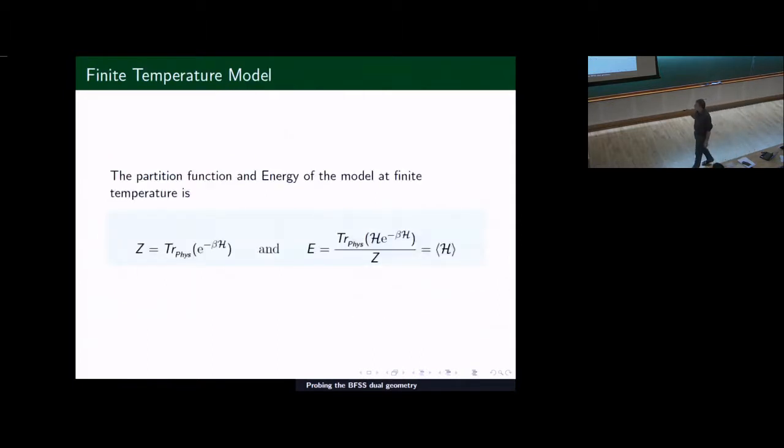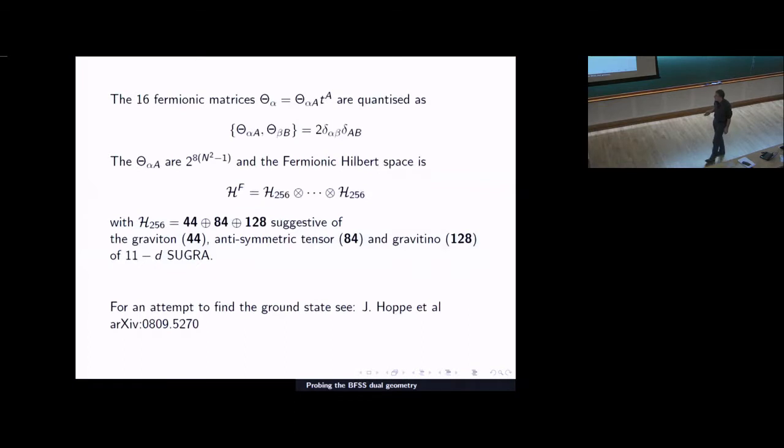The partition function, now once we have a Hamiltonian for the system, we can discuss the partition function. We're interested in the trace of e to the minus beta H. There is a Gauss law constraint. There's one gauge degree of freedom left, one constraint that needs to be satisfied. This gives a Gauss law constraint, and it says that physical states are SU(N) or U(N) singlets. So the energy of the system is then the expectation value of the Hamiltonian, and that's one of the principal observables.